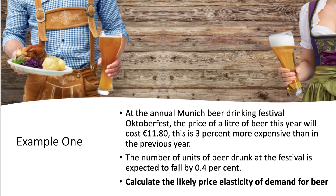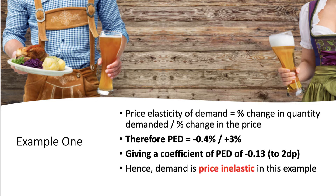Let's work through three simple examples using the percentage approach. First: the Munich Beer Festival. The price of a litre of beer this year is €11.80, which is 3% more expensive than the previous year, and the number of units of beer drunk is expected to fall by 0.4%. In the exam, always put the formula in to gain credit. So it's percentage change in demand over percentage change in price: minus 0.4% divided by plus 3%.